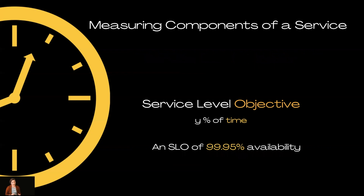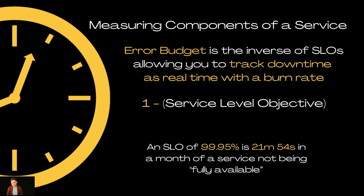If we have a service level objective in place — say an SLO of 99.95% availability — how can we turn that into an error budget? The error budget is just the inverse of the SLO, moving from an abstract percentage to something tied to real time with the burn rate. So if I have an SLO of 99.95%, my error budget over the course of a month is 21 minutes and 54 seconds in 28 calendar days of that service not being fully available before we've defined it as a problem.